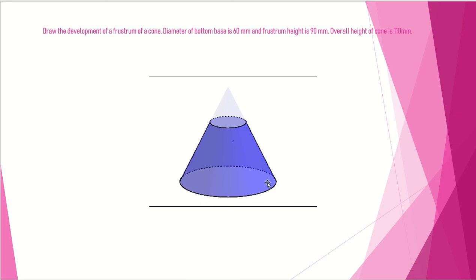You are given a cone. The total height of the cone is 110 mm and the base diameter is 60 mm. A frustum is formed when a sectional plane, horizontal or parallel to the base, cuts the cone such that the leftover portion is termed the frustum. You are asked to draw the development of this particular frustum.